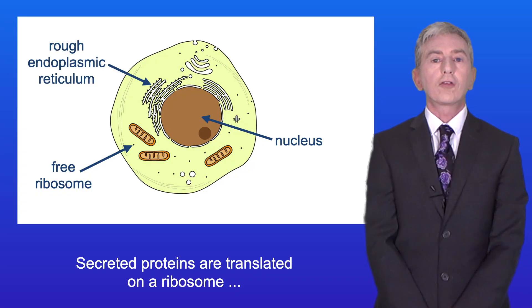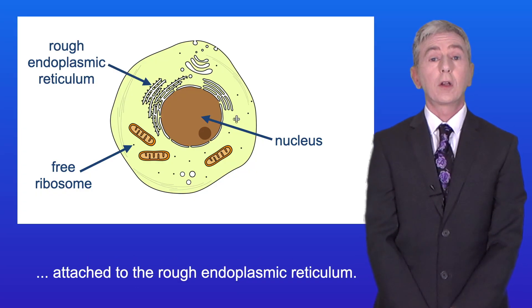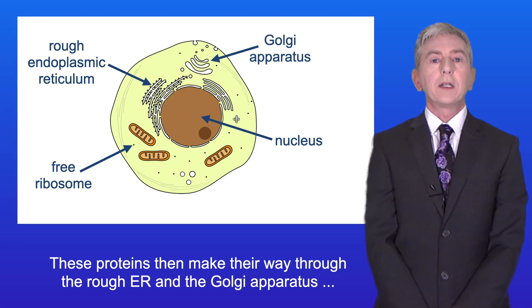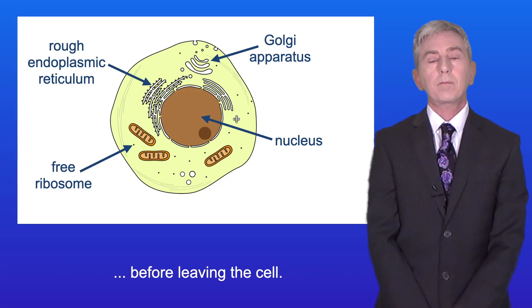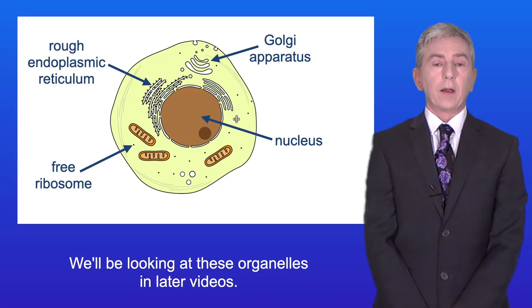Secreted proteins are translated on a ribosome attached to the rough endoplasmic reticulum. These proteins then make their way through the rough ER and the Golgi apparatus before leaving the cell. We'll be looking at these organelles in later videos.